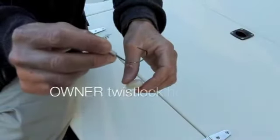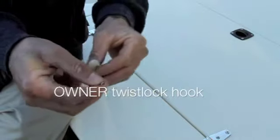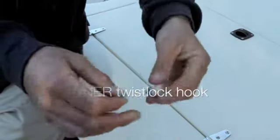We're using a 5.0 Owner twist lock hook. It's an eighth ounce weight. Super easy to rig. You just screw it into the nose of the bait.